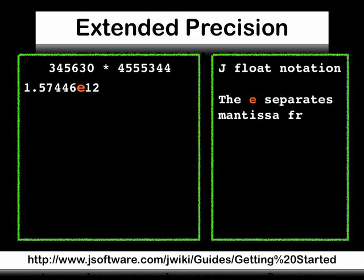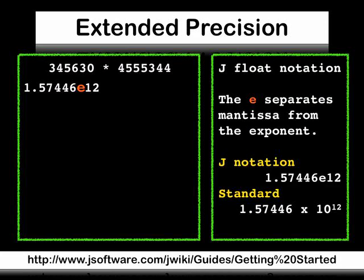When two large numbers are multiplied, J will default to displaying in float notation. The E separates the fractional mantissa from the exponent. In J notation, 1.57446E12 is equivalent to the standard 1.57446 times 10 to the 12th.